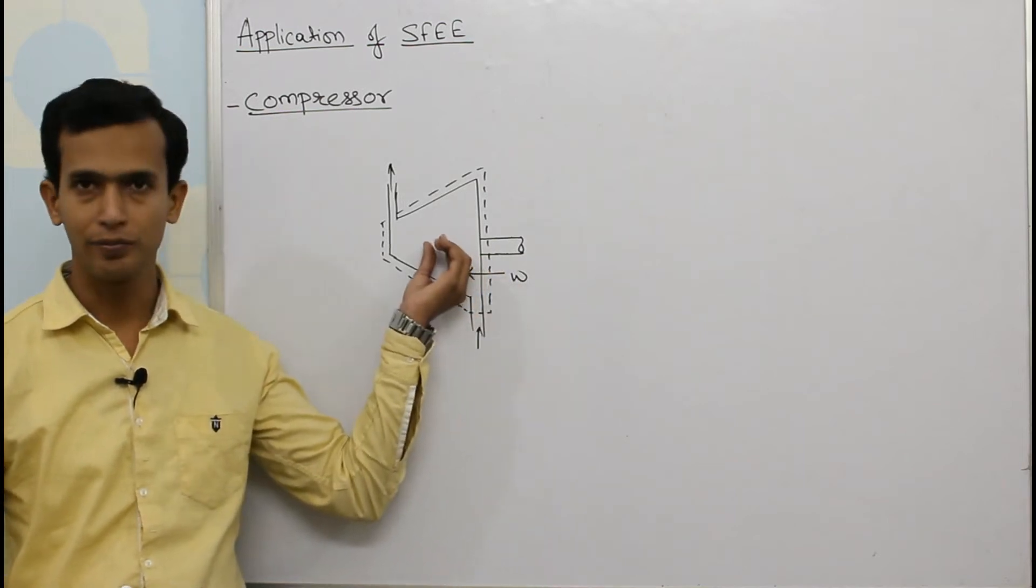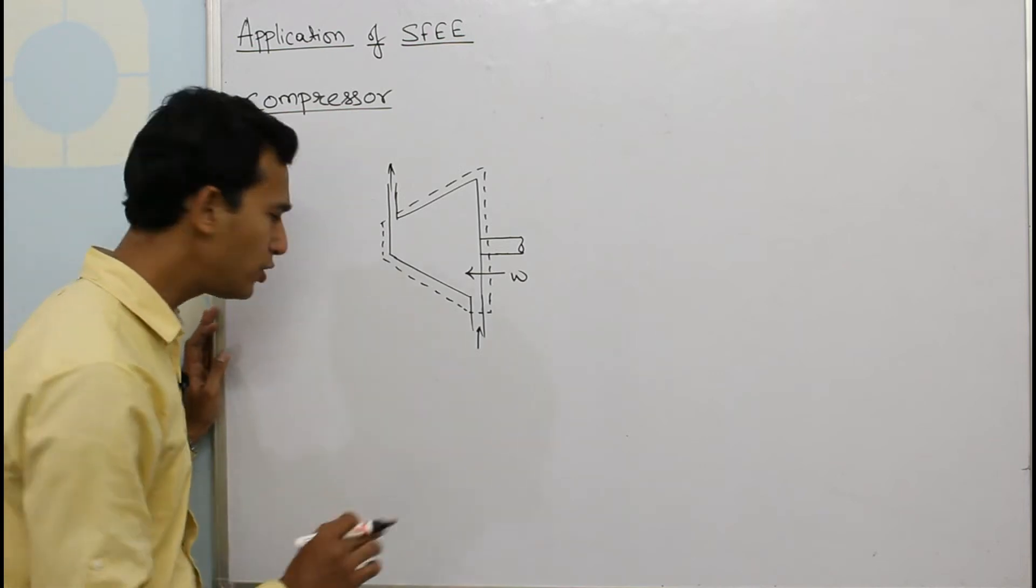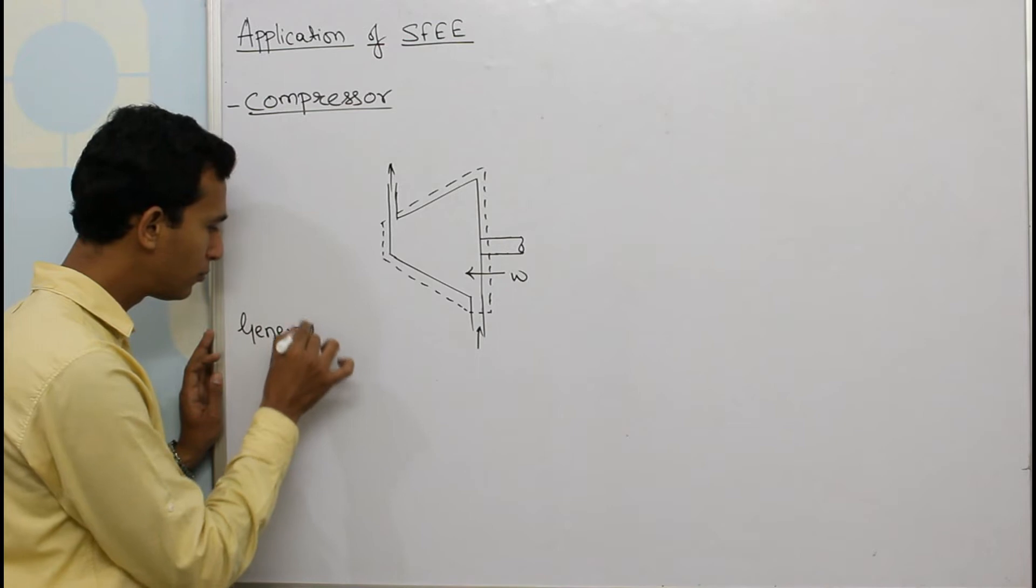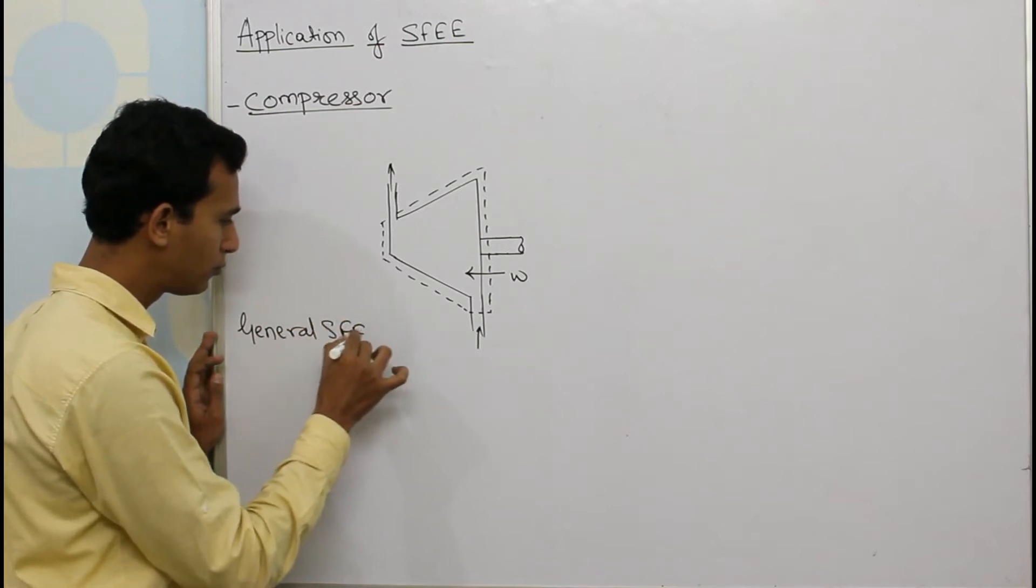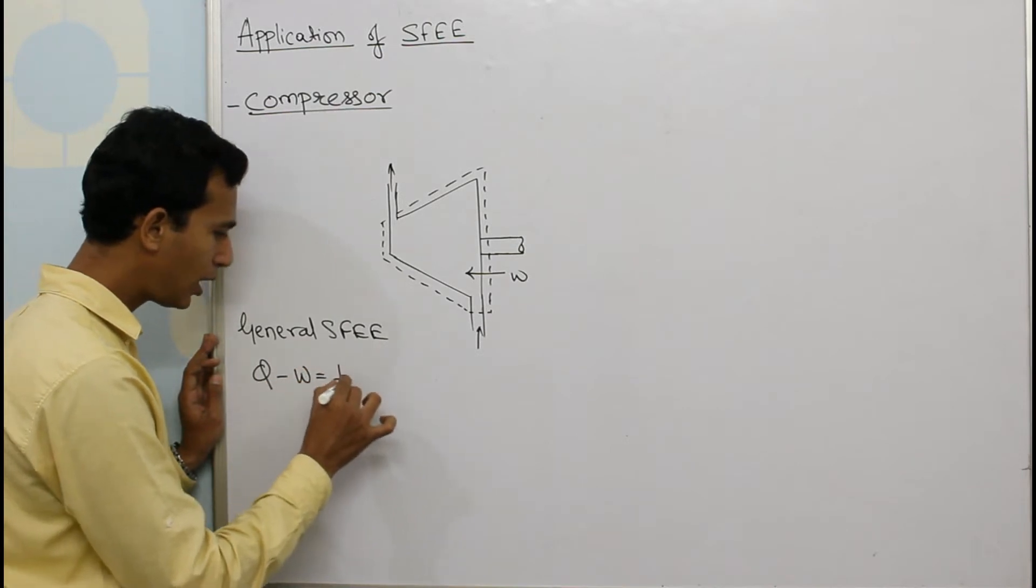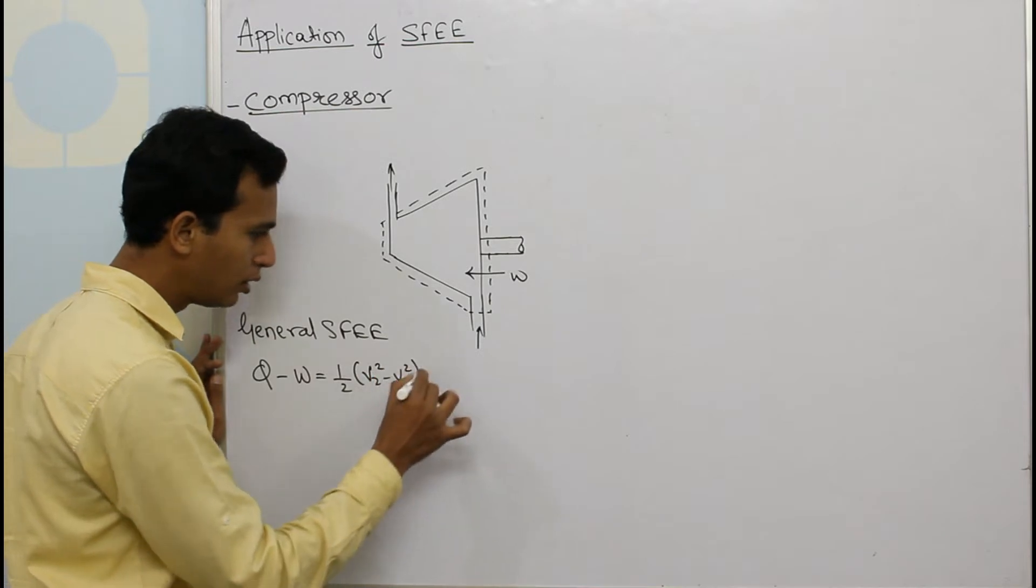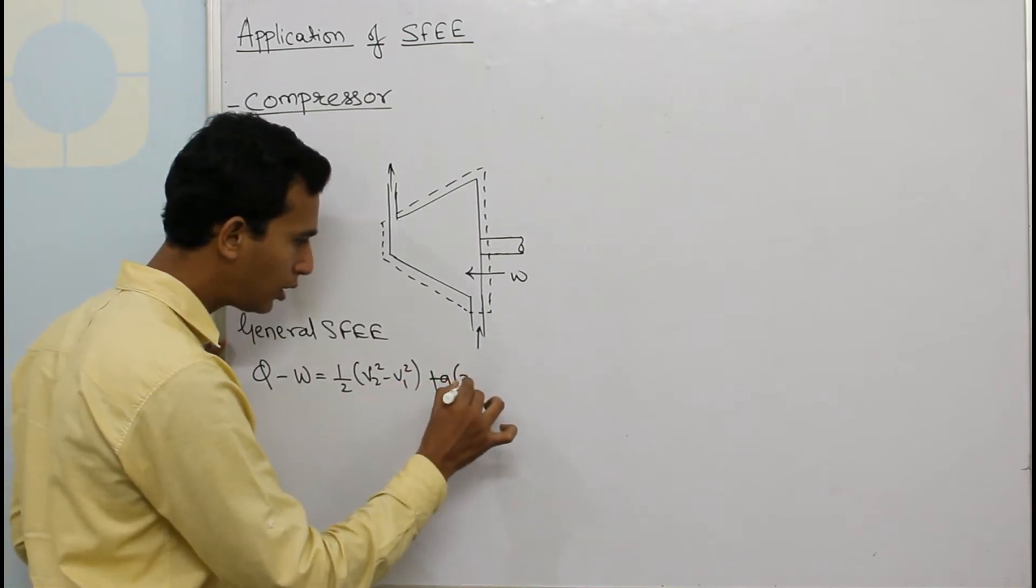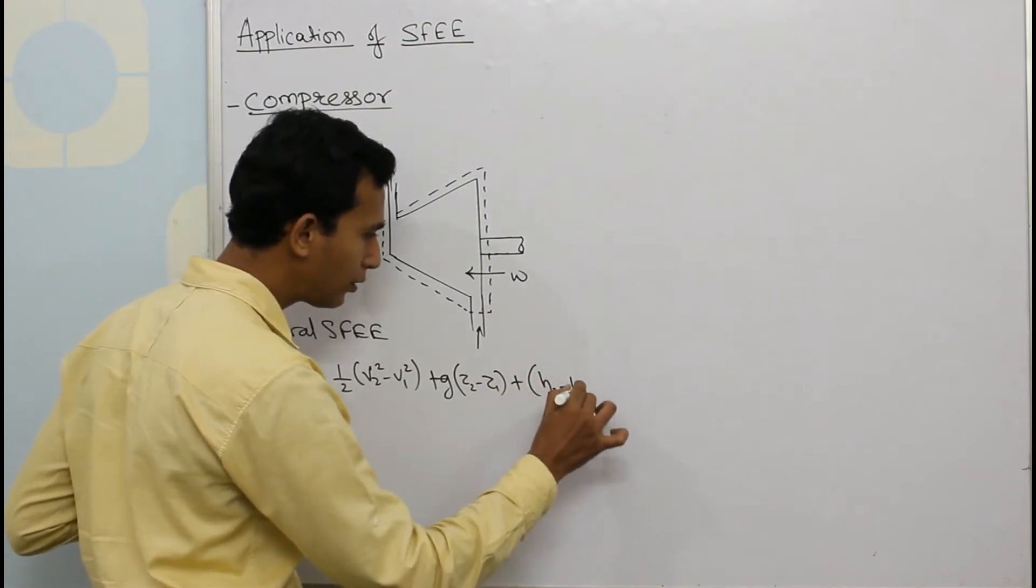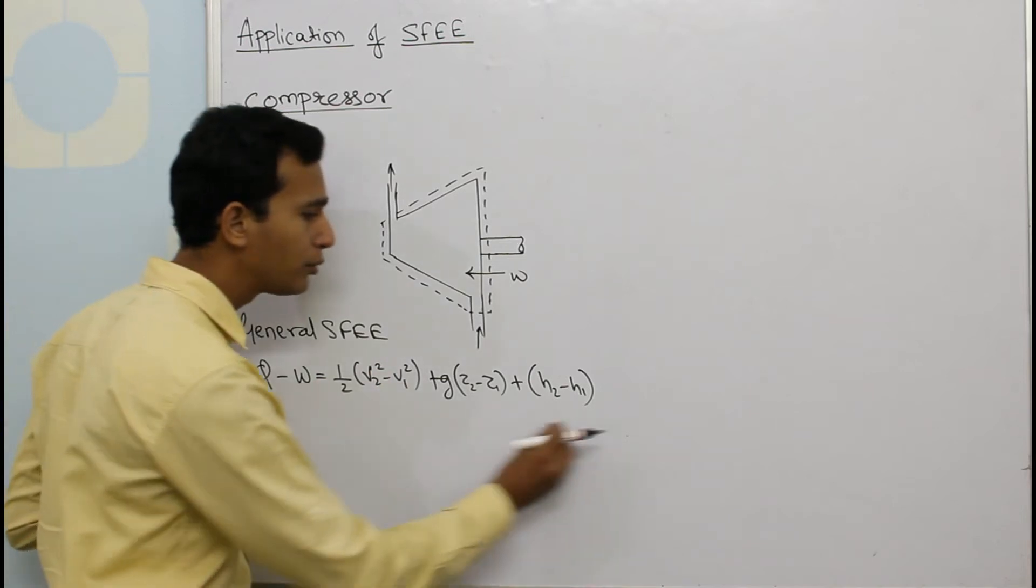Now as per the general form of steady flow energy equation, we have Q minus W equals half times V2 squared minus V1 squared plus G times bracket Z2 minus Z1 plus H2 minus H1.